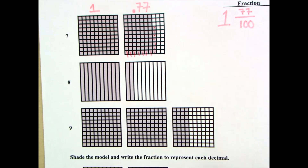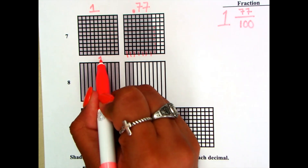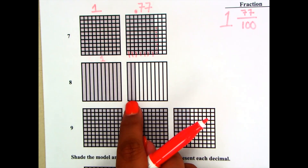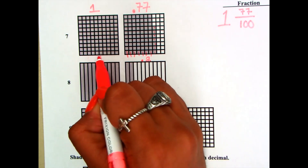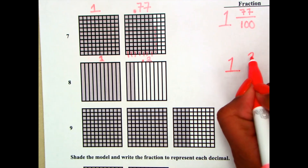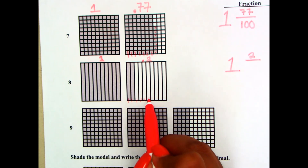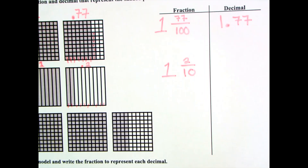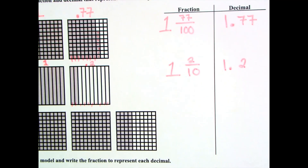Now let's look at number eight. I have tenths, so I know it's going to end in the tenths place. Do I have any whole numbers? Yes. Even though it looks different — this has units and this has rods — the whole thing is still shaded, so this still represents one whole. How many is shaded here? Only 2 tenths — only 2 rods are shaded. This is a mixed fraction: I have one whole and 2 rods shaded as my numerator, out of how many? This time it's 10. So this is 1 and 2 tenths — the decimal would be 1.2.